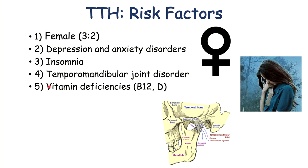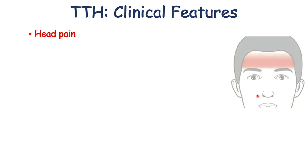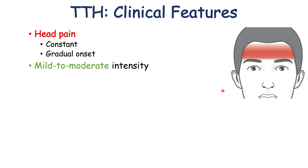A lot of these risk factors are going to be related to triggers of these types of headaches, which we'll talk about later. Now let's get into the clinical features of tension type headaches. Because they are a headache, there is going to be head pain. This head pain is going to be a constant pain — when it occurs, it's going to be constant, with a gradual onset. It's not going to be very severe; it's going to be mild to moderate in intensity.